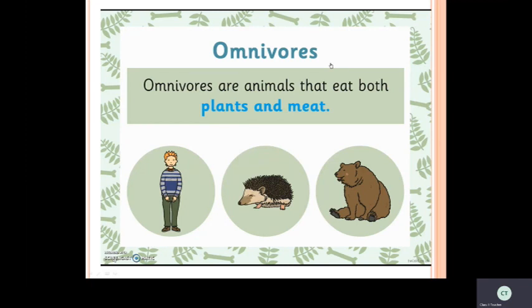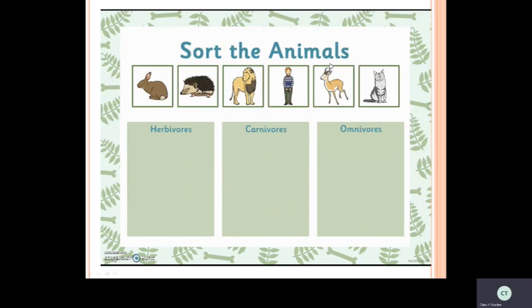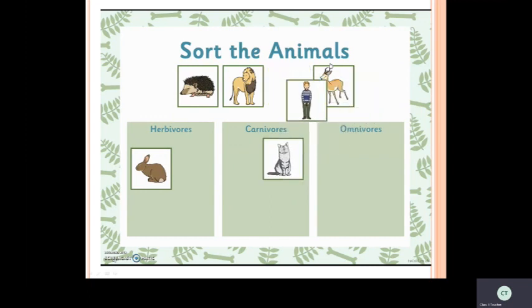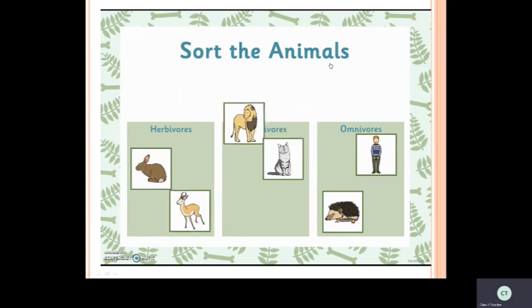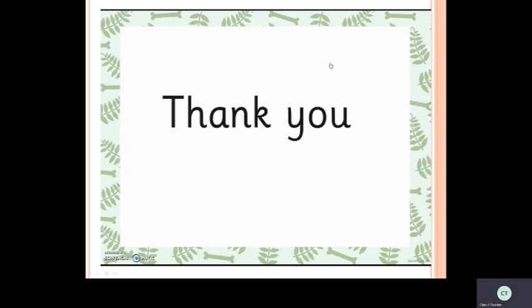Now a small exercise: sort the animals shown in the figures into herbivores, carnivores, and omnivores. Identify which animals come under which category. Herbivores: rabbit, deer. Carnivores: flesh-eating animals shown. Omnivores: human beings, hedgehogs. Thank you, children.